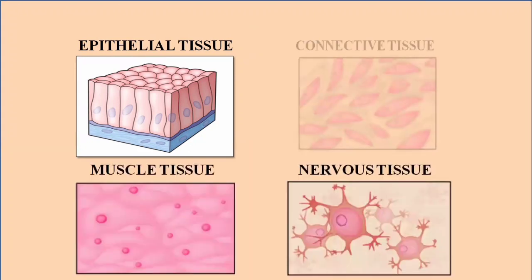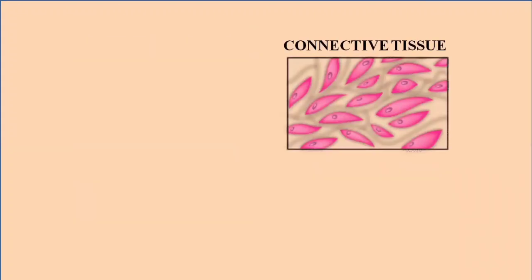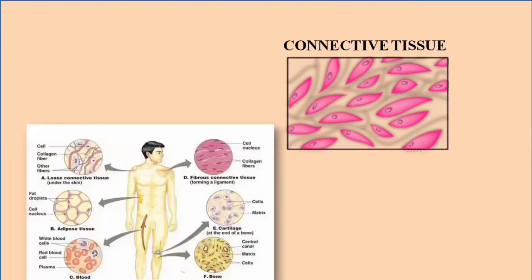The next type is connective tissue. As the name indicates, connective tissue connects the different tissues of the human body. It is made up of different types of cells, and it also contains fibers and a matrix medium. It connects different tissues and also provides support to different organs of the body. An example is cartilage, which provides support and protection to the bone.